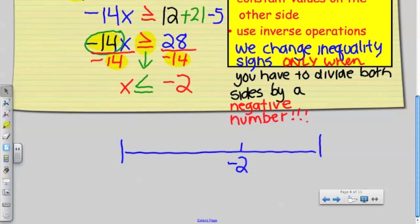So if x is less than or equal to negative 2, am I drawing an arrow this way or pointing to the right? Pointing to the left or pointing to the right? What do you think? Less than. Pointing to the left. This little arrow is pointing to the left.